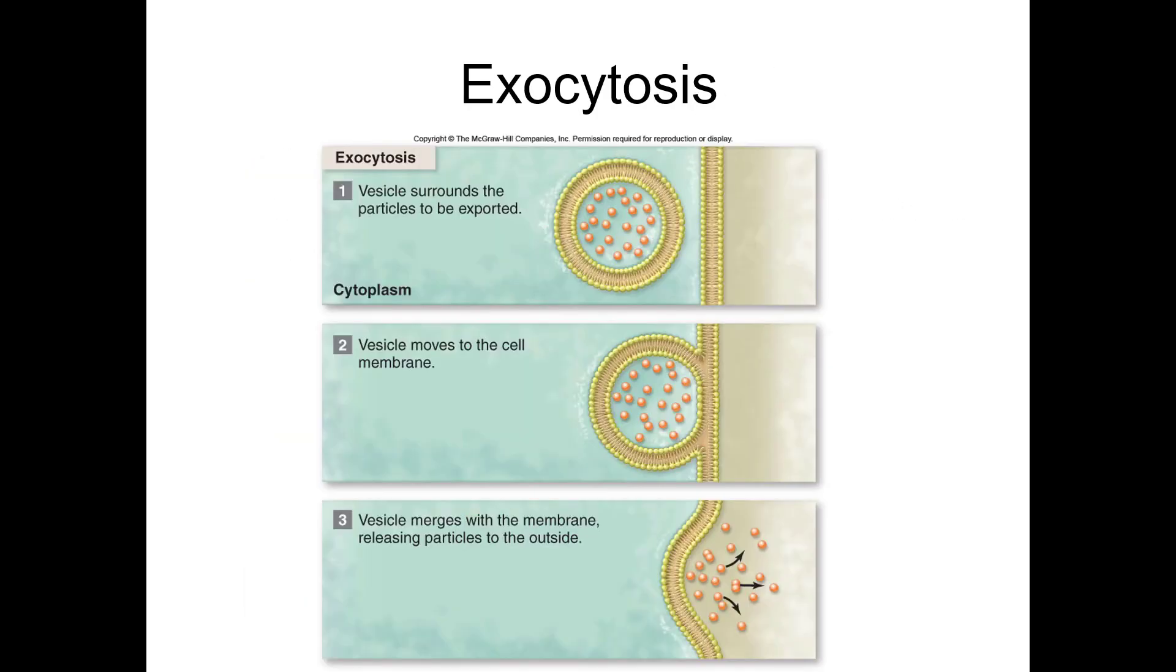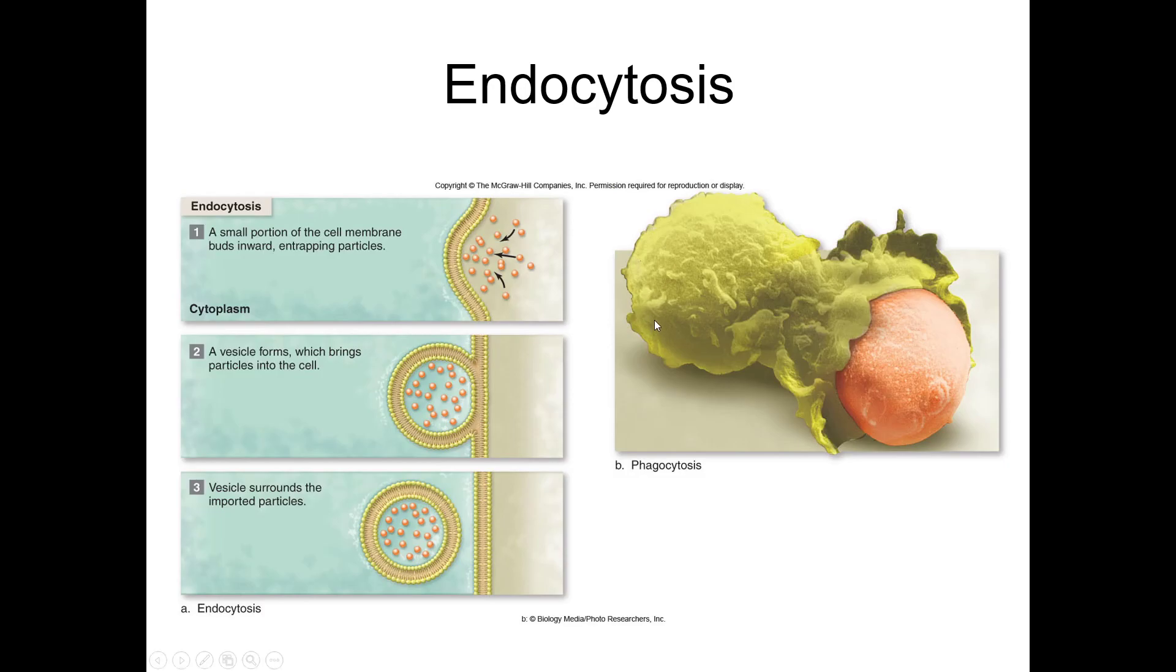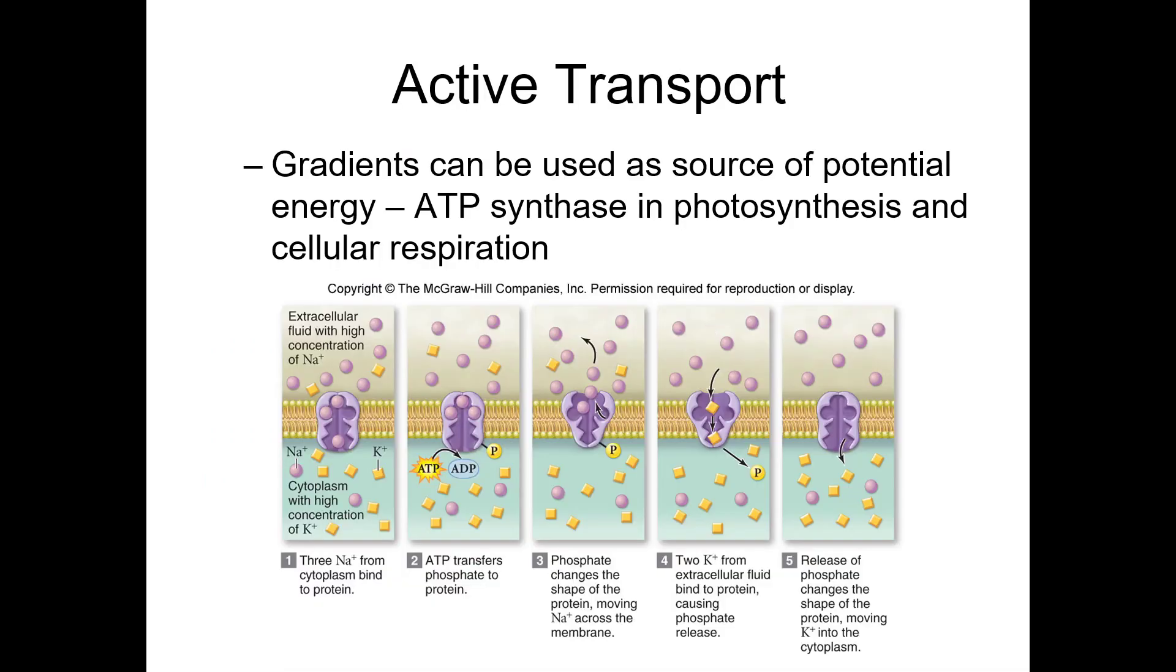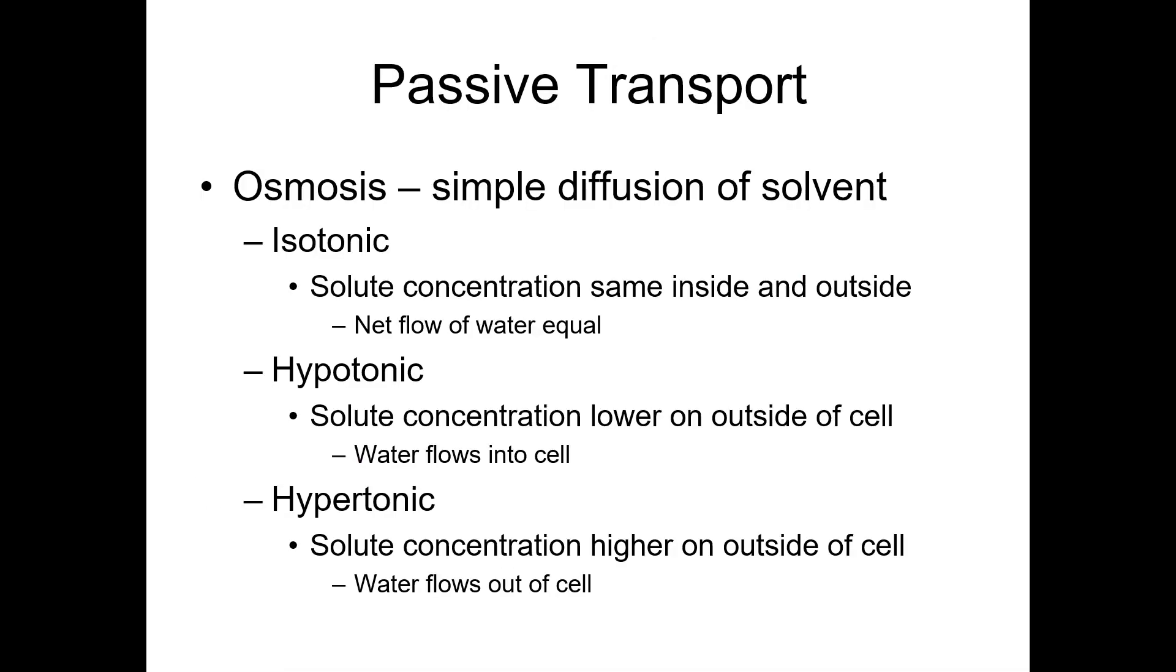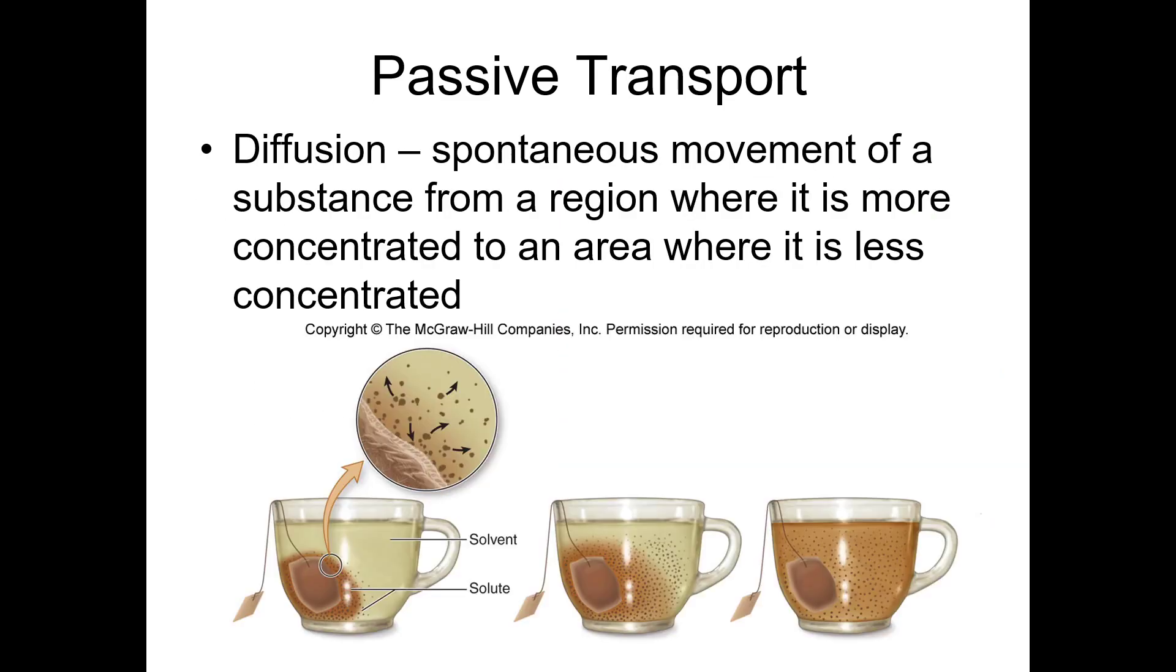All the other modes though, active transport, exocytosis, endocytosis, those will be the answers for the multiple choice questions. Make sure you know the examples that I gave in class. Those are the ones I typically use to describe these forms of transport across the membrane. The last five questions of your quiz will be on these six concepts, and that will finish lecture seven for you.